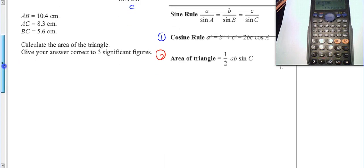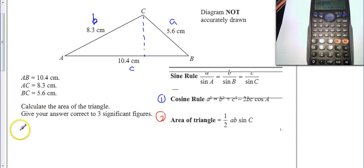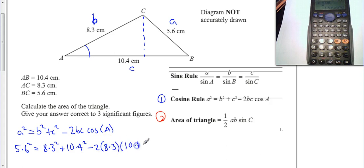If we look at step one, it says a squared is b squared plus c squared minus 2bc cos A. And that's if I want to find out this angle A in here. So my a is 5.6 squared, is equal to 8.3 squared plus 10.4 squared minus two lots of 8.3 times 10.4 cos A. So we have to rearrange this and work out what this cos A is, and then we can work out what A is.